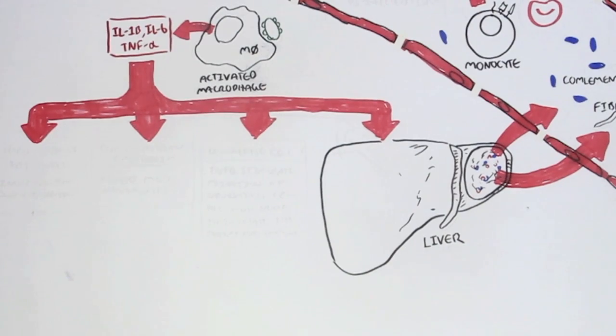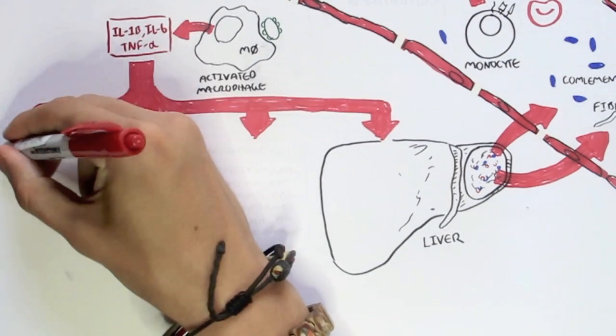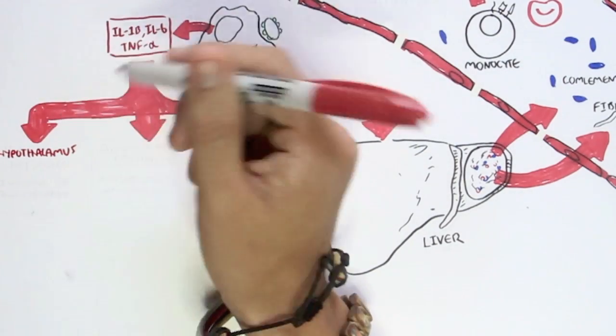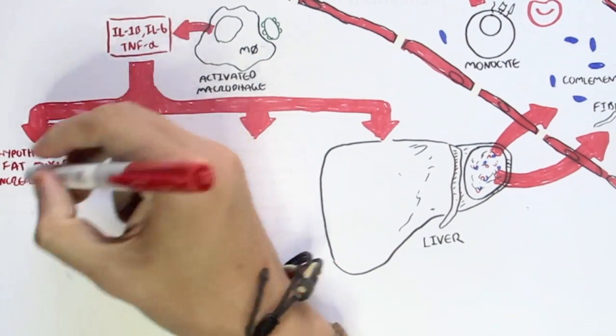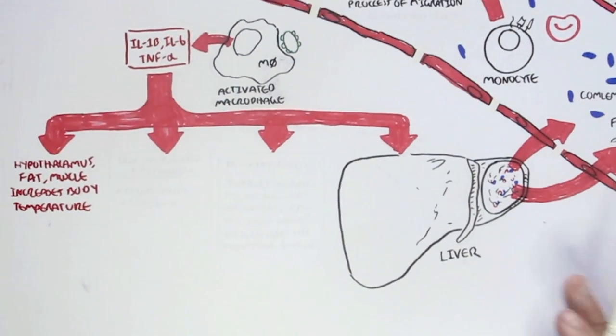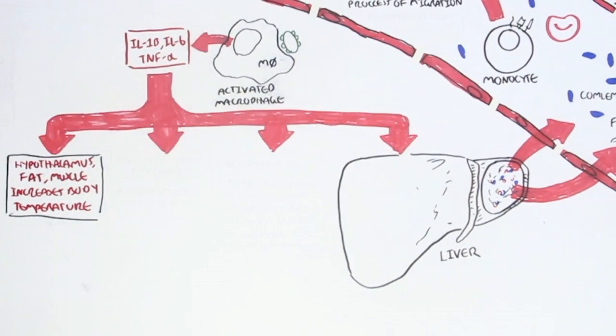So, what else does an activated macrophage do? Well, the cytokines the activated macrophage secretes cause the hypothalamus, fat, and muscles to increase the body temperature by different means. And now you might think to yourself, this is why people get fevers when they have an infection.